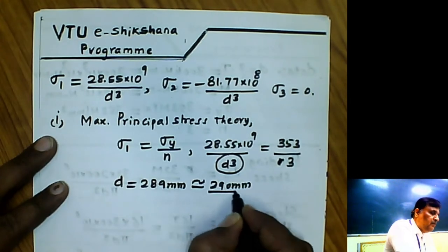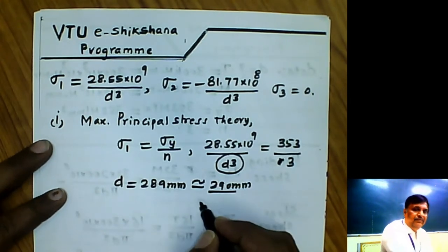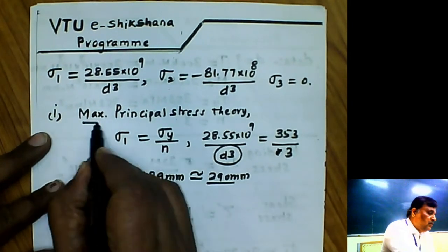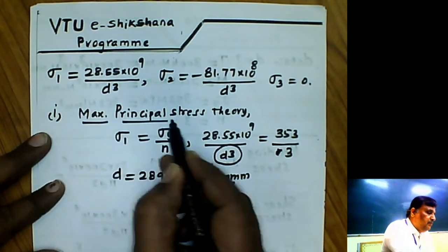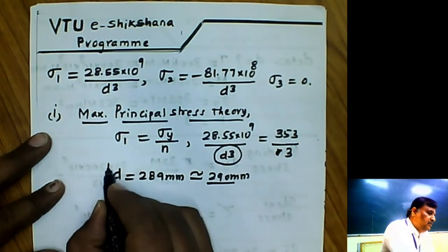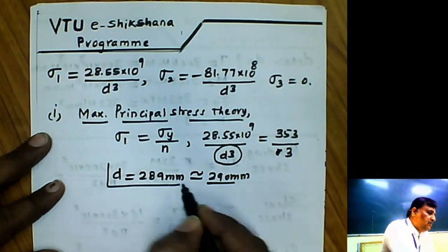So according to the maximum principal stress theory, the diameter of the circular rod is 290 mm.